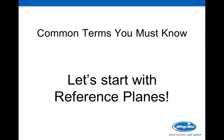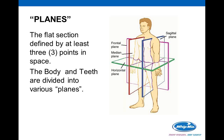We're going to start with reference planes. Planes are a flat section defined by at least three points in space. The body and teeth are all divided into various planes. In this illustration we have a frontal plane, a horizontal plane, and a sagittal plane. The sagittal plane can occur on either side of that frontal or median plane.